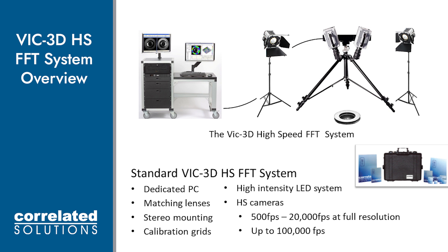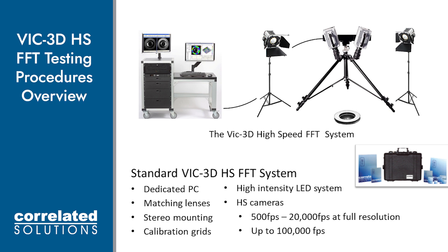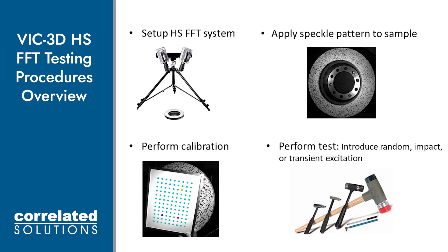This is what that setup looked like for this test. We have the cameras connected to the PC, the high-powered LEDs, and cameras pointed at the sample, and the sample has a speckle pattern on its surface. Along with this hardware, we provide calibration grids, lenses, mounting, and a few other accessories with the system. After we have a good setup, which involves pointing the cameras at the sample, applying a great speckle pattern, and focusing on the speckle pattern to get a nice, crisp image, calibrating the system involves capturing images of a calibration grid with high tilts about all three axes in place of the speckle pattern.